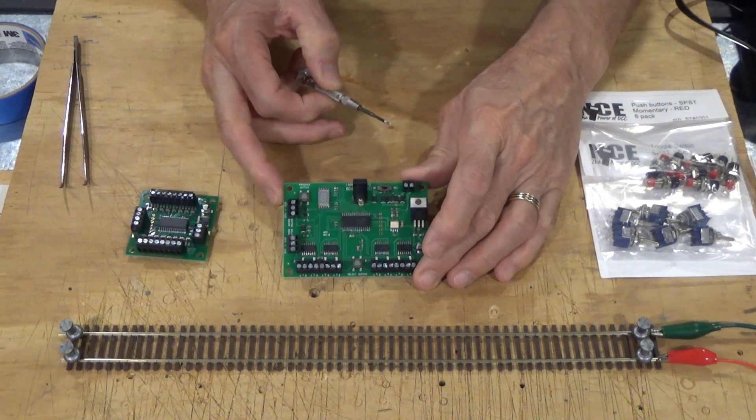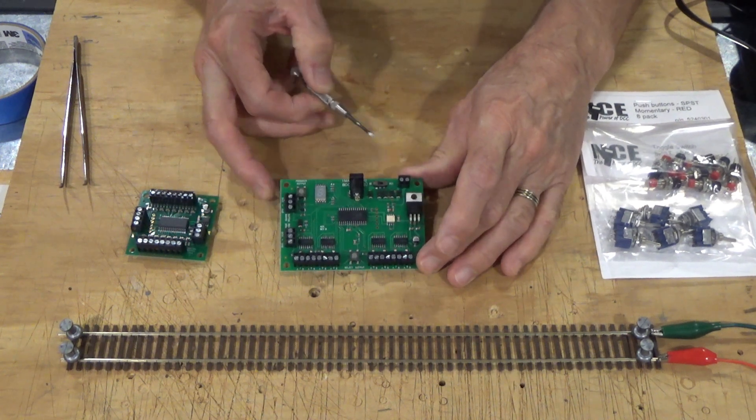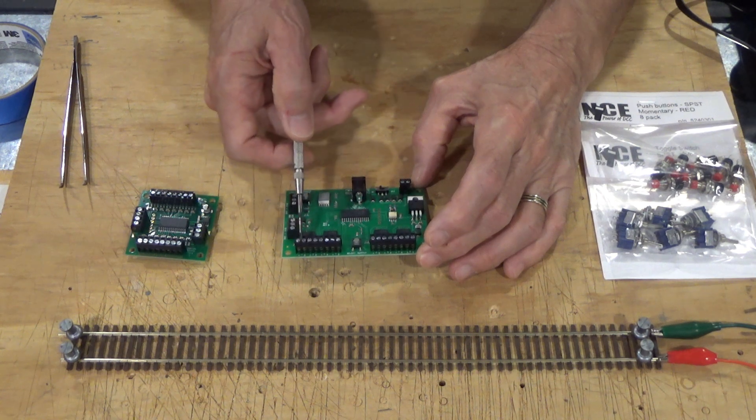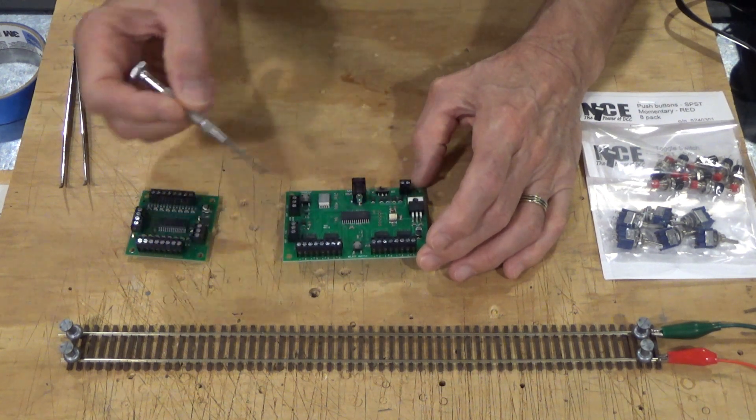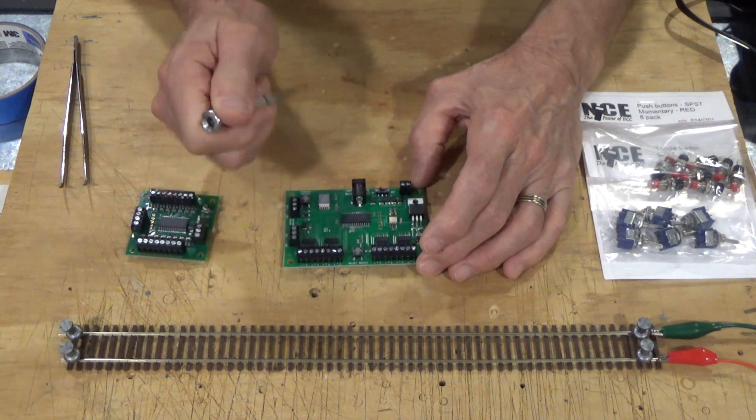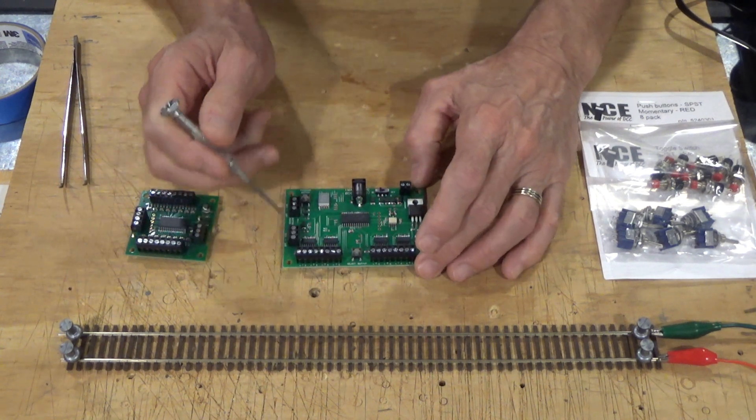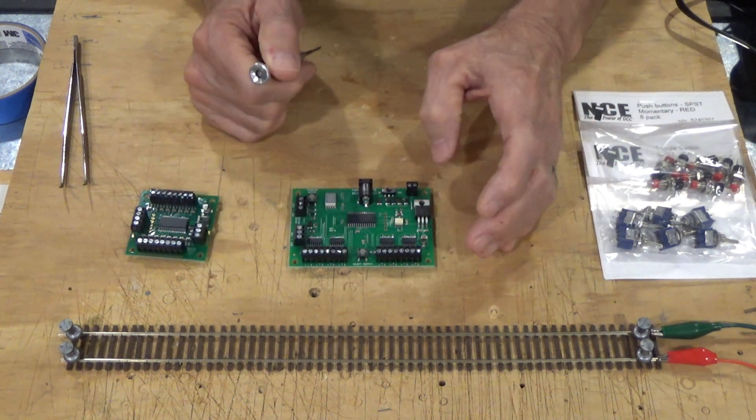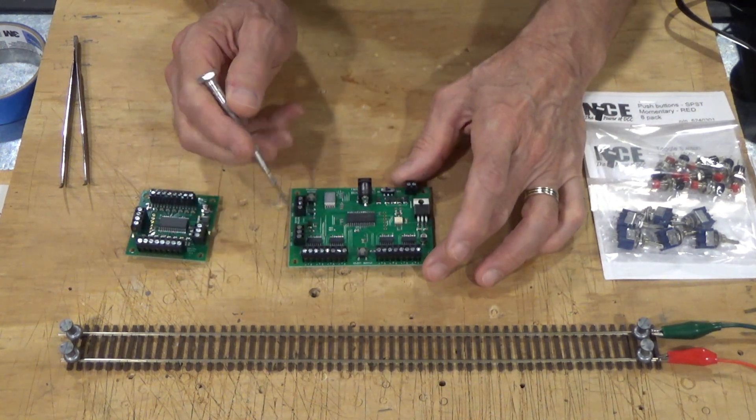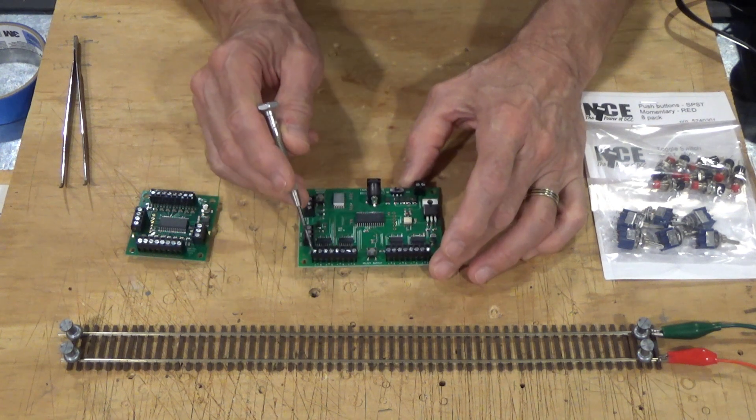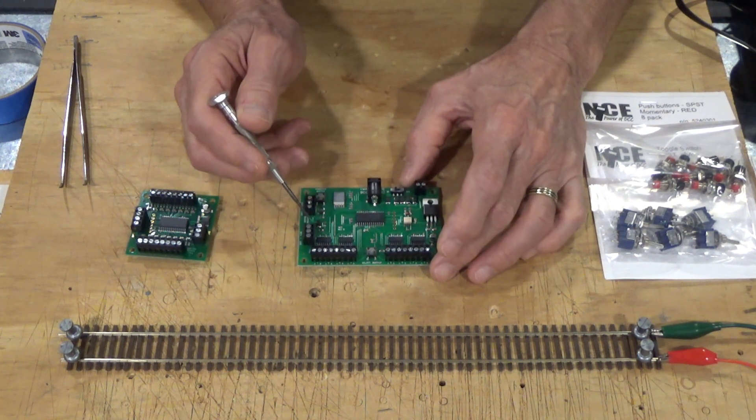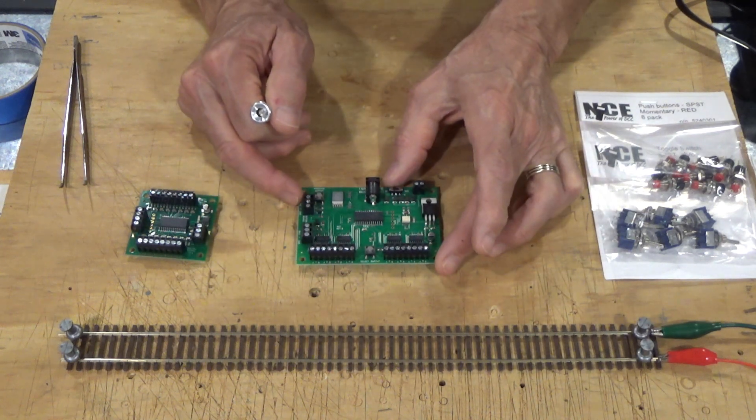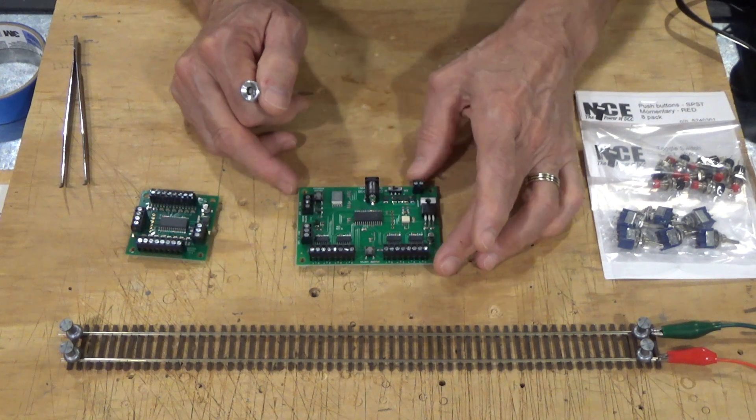This is the Switch 8 Accessory Decoder. As the name implies, it has eight outputs, one through four and five through eight, with an A and a B. The A and the B is where you attach the wires to your tortoise switch machine. Every time that you hit a push-button or toggle associated with this, it will reverse the polarity at these outputs, switching the polarity and the tortoise or whatever switch machine will reverse direction.